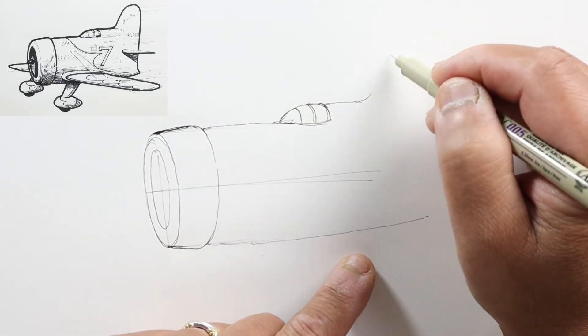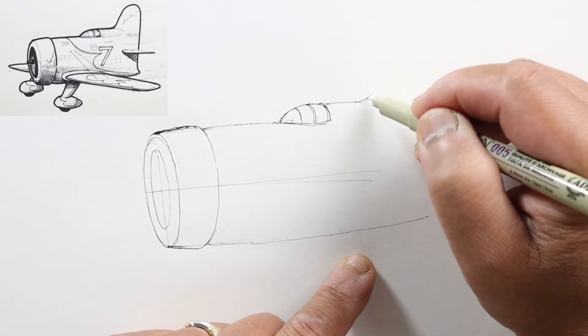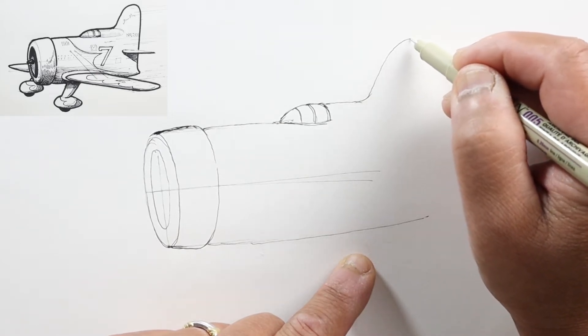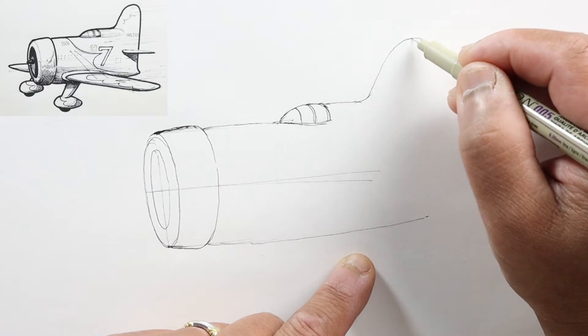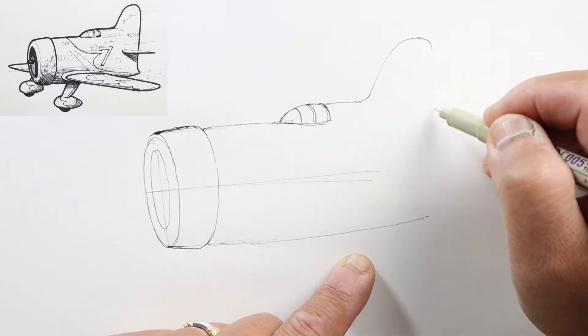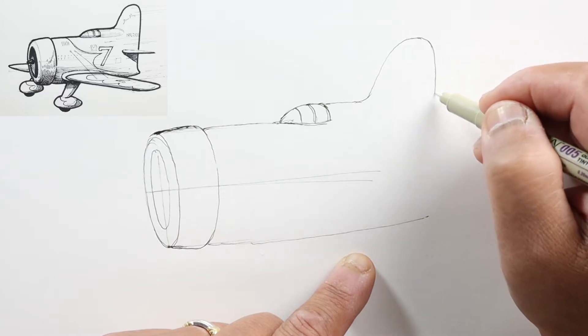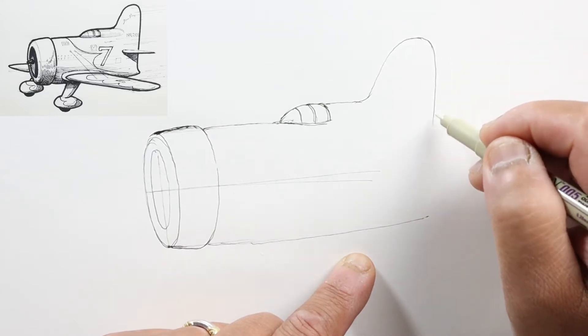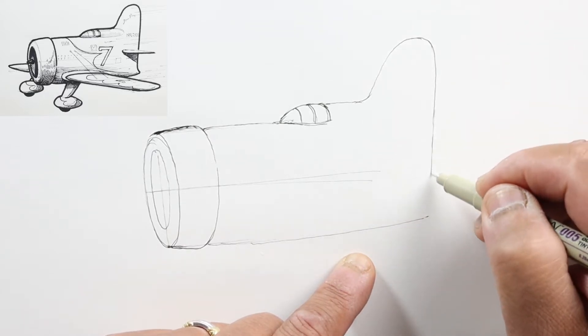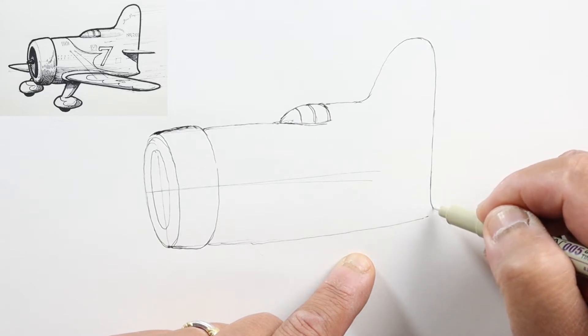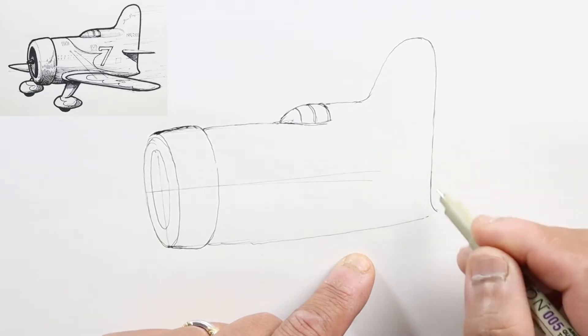Then this line will curve up to form the tail, the upper fin. Curve up and down this way, all the way down to meet up with our line here, and it curves out a little bit for a pointy section.